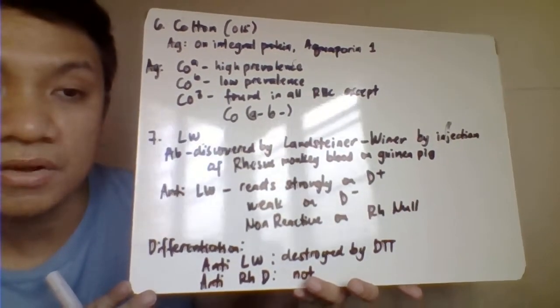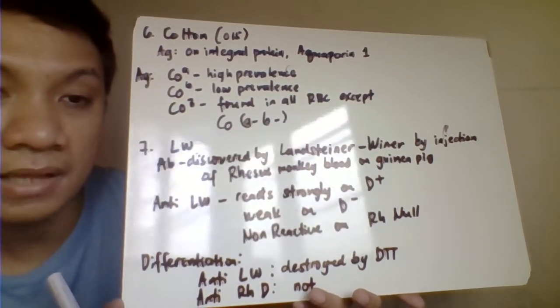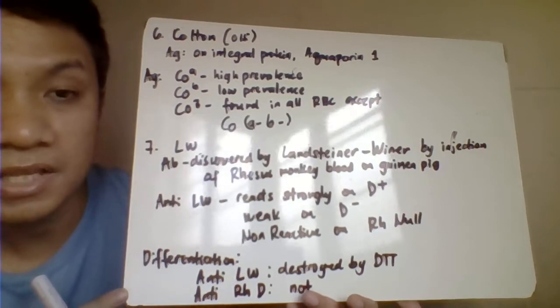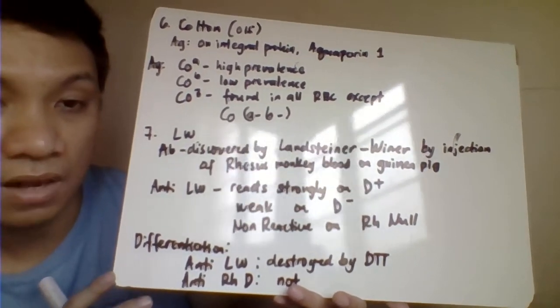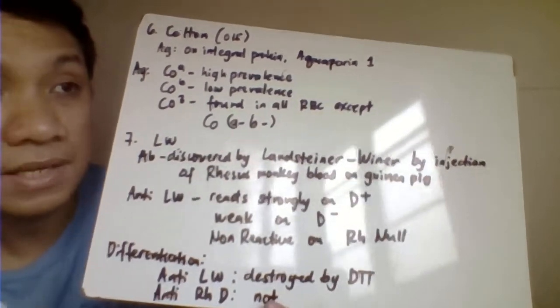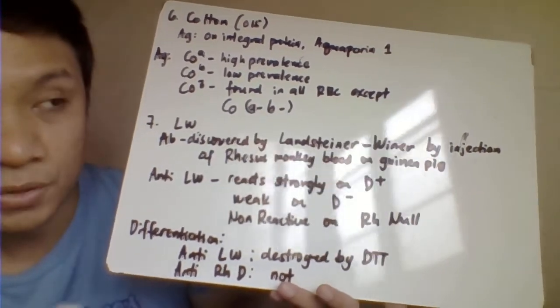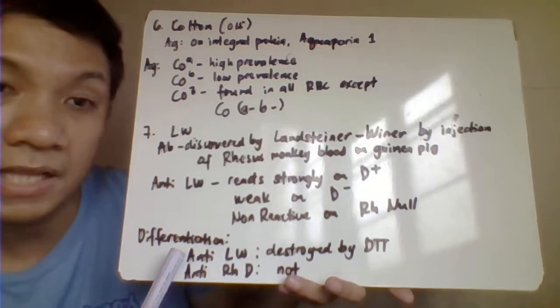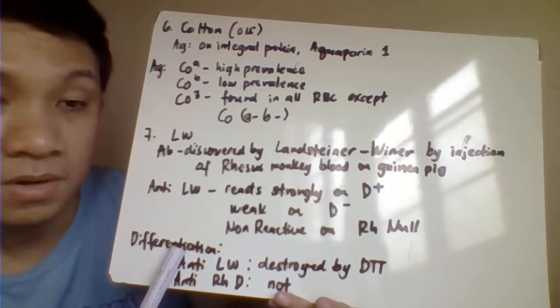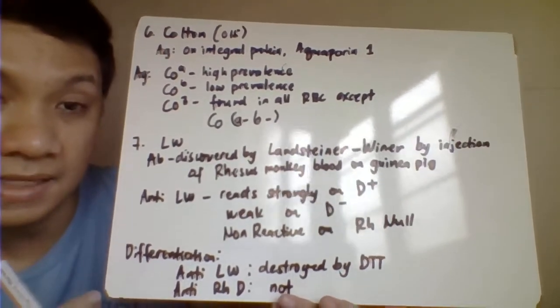Differentiation between your anti-LW and your anti-RH D is by addition of your DTT or dithiothreitol. Dithiothreitol is an IgG enzyme reducing agent, and that one would tend to destroy your anti-LW but not your anti-RH D antibody.